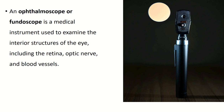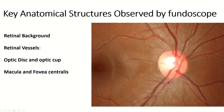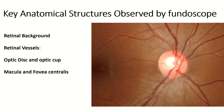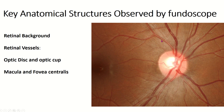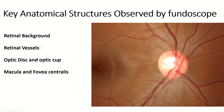An ophthalmoscope, used in ophthalmoscopy, is a medical instrument used to examine the interior structure of the eye, including the retina, optic nerve, and blood vessels. The key anatomical structures observed via ophthalmoscopy are: the retinal background, retinal vessels, optic disc, optic cup, macula, and fovea centralis.